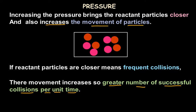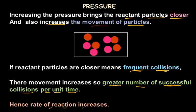A greater number of successful collisions means there will be more collisions that end up forming the products. There are many collisions, but not all collisions end up forming the product — those are not called successful. The collisions which form the product are called successful collisions. So increasing the pressure brings reactant particles closer, there will be frequent collisions, successful collisions will also increase, and hence the rate of reaction increases.